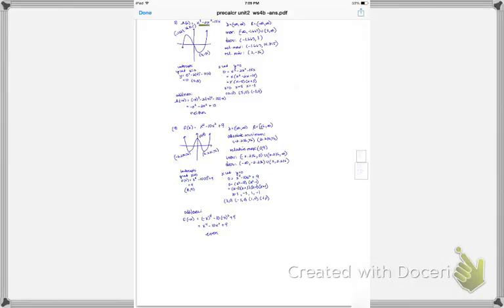The next one again is a cubing function. Domain and range are all real numbers. Find your relative maximum, your relative minimum. Find your intercepts by plugging in x is zero, y is zero. Label all of them. You can label these BCD, whatever you'd like to label them. And check to see if it's odd or even.